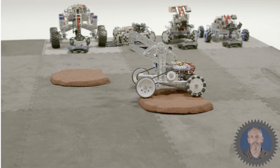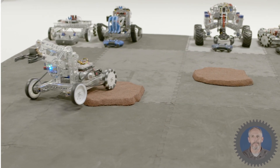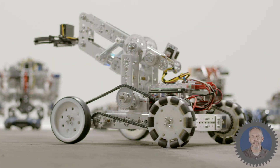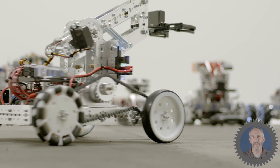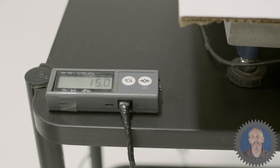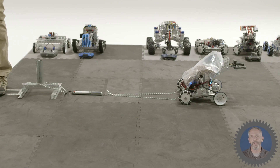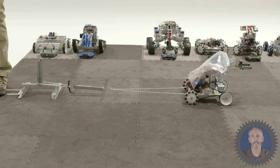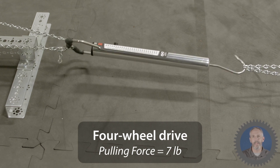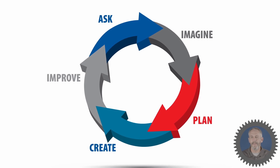Four-wheel drive robots tend to give you more traction, which equals more pulling force. The downside is that you tend to lose maneuverability, making it harder to make turns. This robot overcomes that by using omni wheels at the back that allow the robot to pivot from side to side. We've added weight to bring its total to 15.2 pounds, and when we attach the spring scale and drive forward, the robot has a pulling force of about seven pounds.